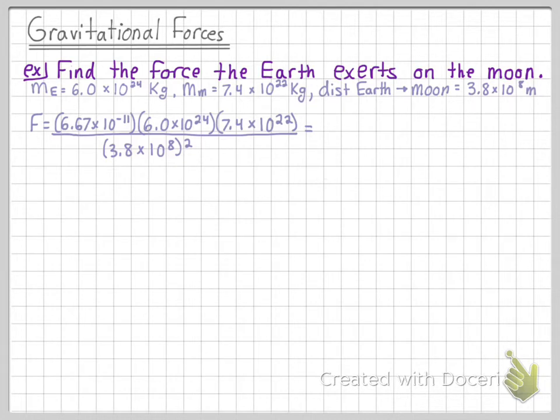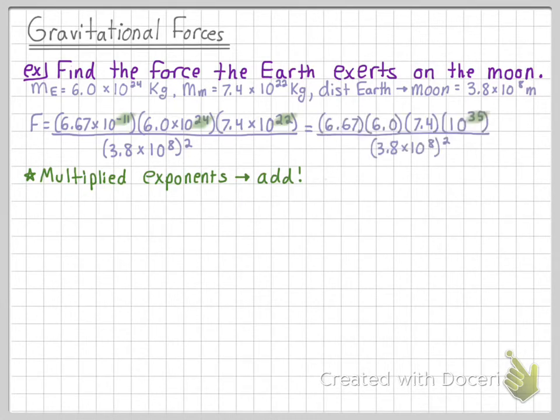We see that we have a lot of pretty big numbers that we have to deal with here, so let's review some simplification steps that we can use to make this equation a little bit easier to deal with. If we're ever multiplying exponents together, like in the numerator here, we can add these exponents together. So negative 11 plus 24 plus 22 gives us 35. Now we just have all those other numbers that we had before, and instead of times 10 to the negative 11 times 10 to the 24 times 10 to the 22, we now just have times 10 to the 35th power.